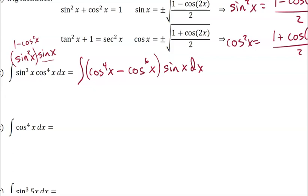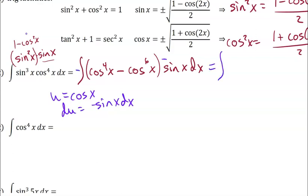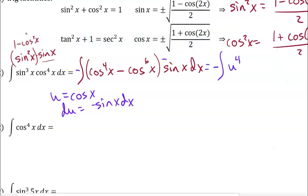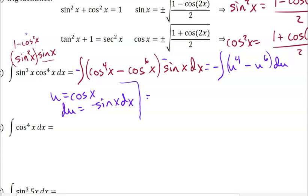So now my u is going to be cosine, and my du — so these are both powers of u — and then my du is the sine; we're going to have to take a negative out, which is fine. So u is cosine of x, du is negative sine x dx, so I'm going to multiply by negative 1 on the inside, negative 1 on the outside. So in terms of u, this is the opposite of u to the fourth minus u to the sixth, du.